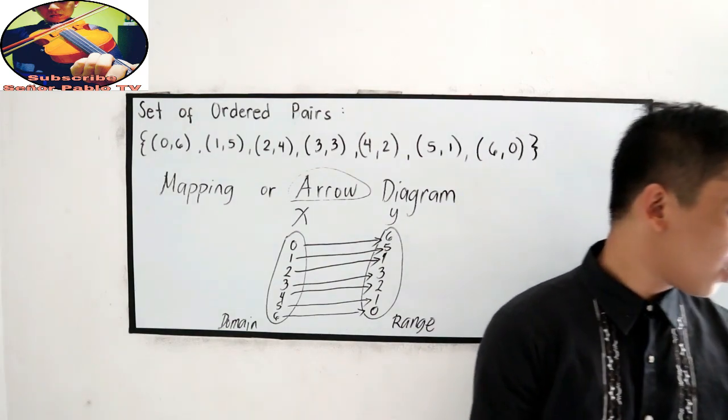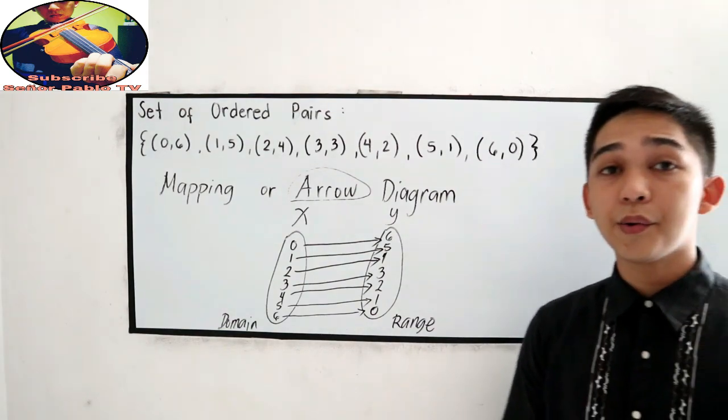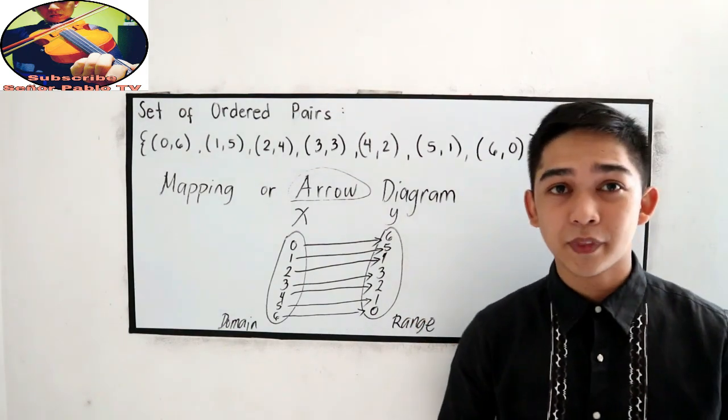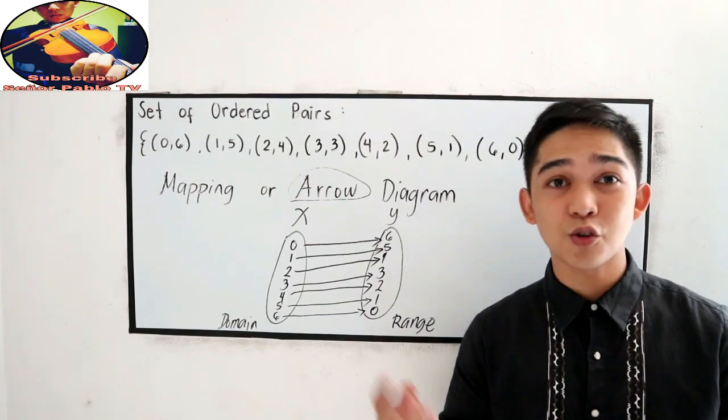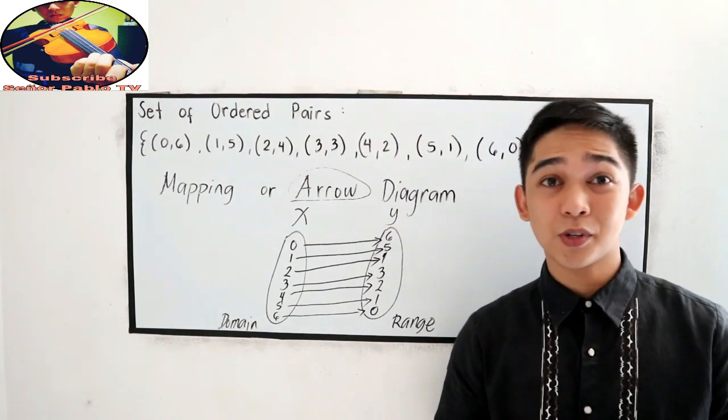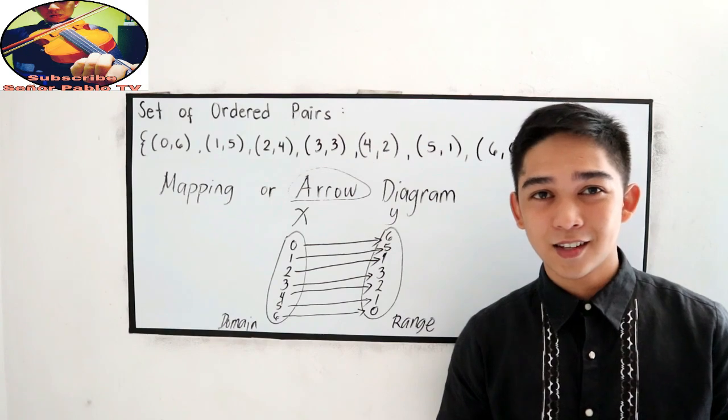So, that is our mapping or arrow diagram, our second way in writing our relations. Let us proceed in the third one, the graph.